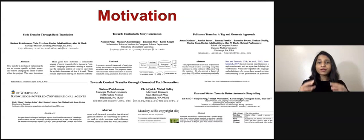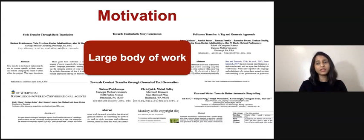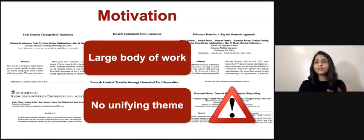There is a large body of work in different domains and tasks, and it is very hard to comprehend these complex architectures and how they are connected with each other. There is no unifying theme to describe this. Hence, we need a schema for controllable text generation models, and that is what this paper is all about.